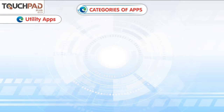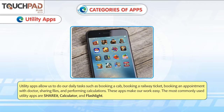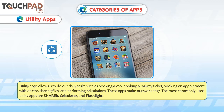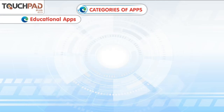Utility Apps allow us to do our daily tasks such as booking a cab, booking a railway ticket, booking an appointment with a doctor, sharing files and performing calculations. These apps make our work easy. The most commonly used utility apps are ShareIt, Calculator and Flashlight.